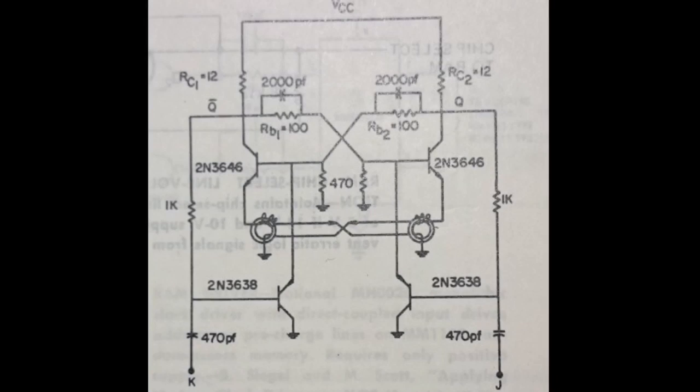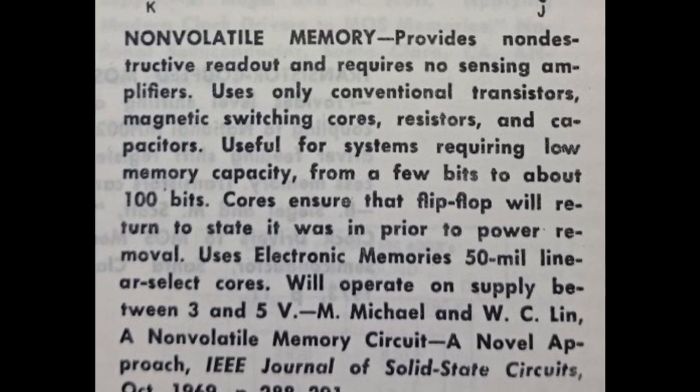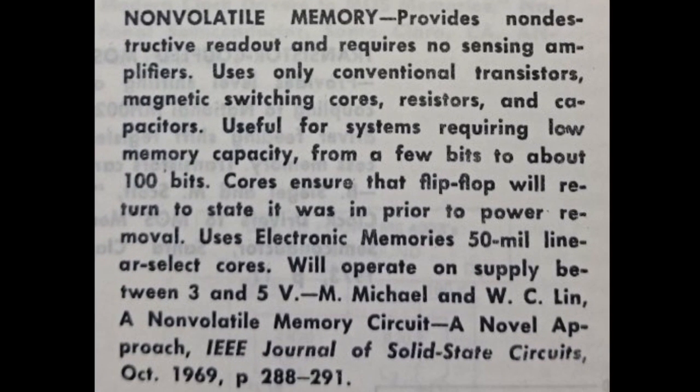Now this is where the non-volatile part comes in. I was shown this page of a 1970s vintage engineering manual on a forum back when I was doing the Core RAM project. Non-volatile memory provides non-destructive readout and requires no sensing amplifiers. Uses only conventional transistors, magnetic switching cores, resistors and capacitors.